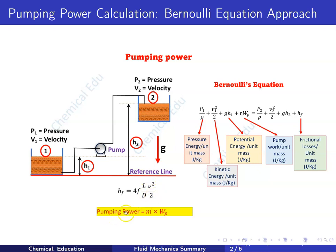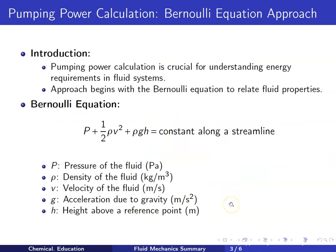If we know the pump work wp, we can multiply it by the mass flow rate to easily get the pumping power. This is how pumping power calculation is done using Bernoulli's equation.